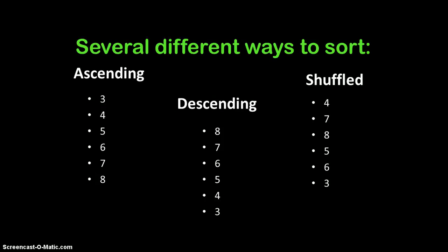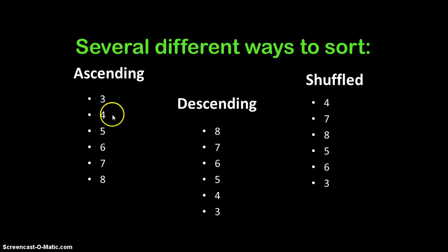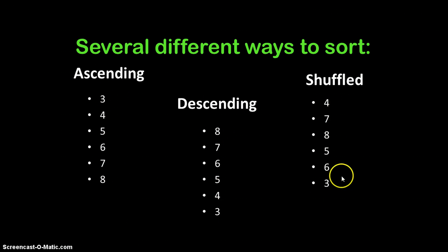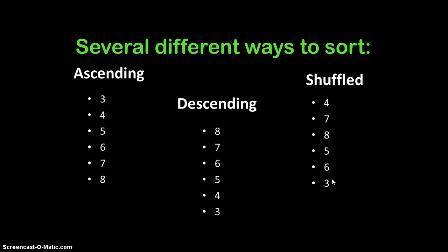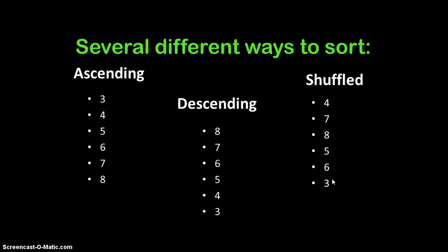There are several different ways to sort things in Excel. There is ascending, which goes up; descending, which goes down; and shuffled, which is just in random order. You're going to have to identify a series of numbers as ascending, descending, or shuffled.